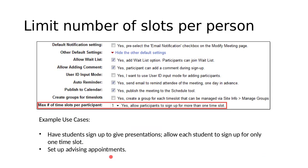There are a set of settings hidden by default under 'other default settings' that you can make visible by clicking on the default settings link. These options include allowing participants to add comments during sign-up, publishing the meeting to the schedule or calendar tool, and the wait list option.